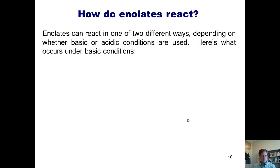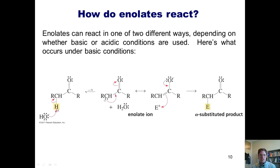Enolates can react in one of two different ways. One way under basic conditions and another under acidic conditions. Under basic conditions, the base strips the alpha hydrogen to generate this enolate, which is existing in these two resonant structures. If I introduce an electrophile into the system, the negative charge at this carbon can reach out and grab that electrophile, forming a bond between the carbon and the electrophile. This type of product is called an alpha substituted product.